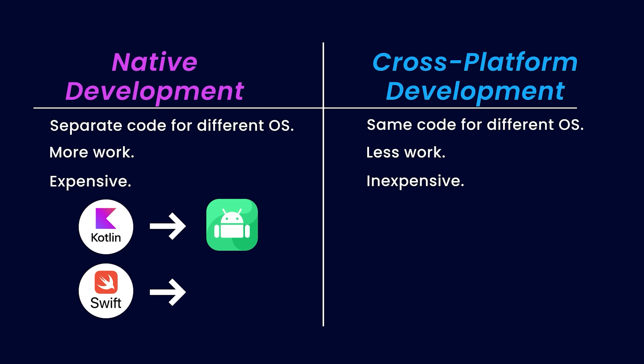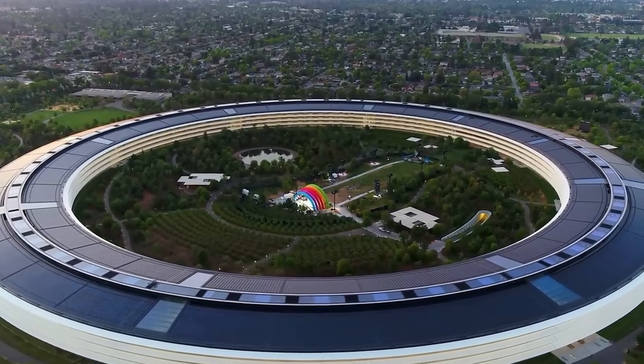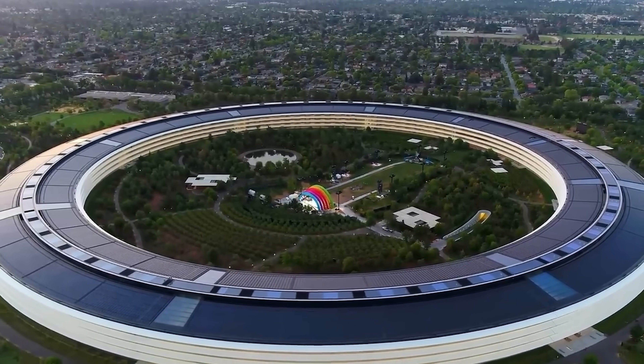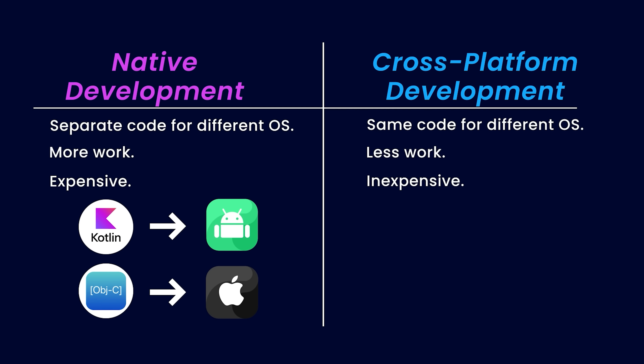For iOS development, Swift is the language of choice. Swift was created by Apple specifically to build apps for iOS. Before Swift, Objective-C was used for iOS development. But since Objective-C is a language from the 80s, it lacked several modern features. So Apple developed Swift for better performance and interoperability with Objective-C.